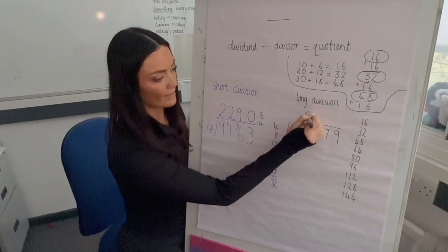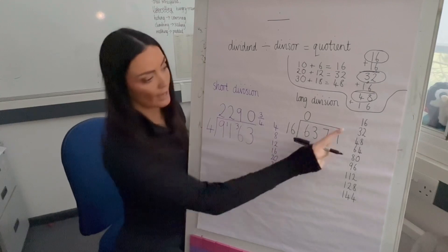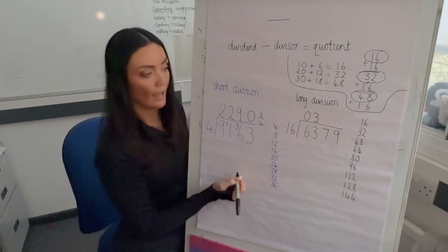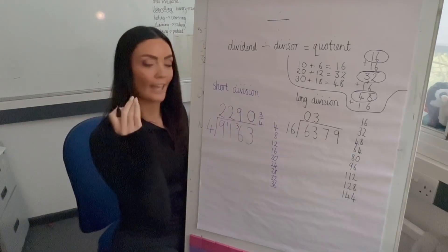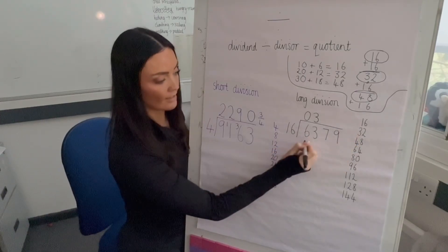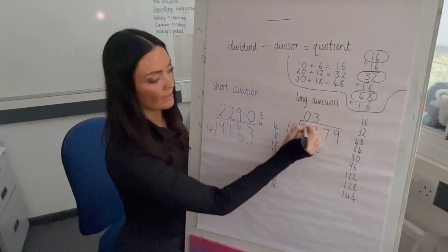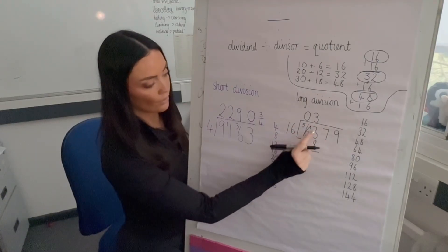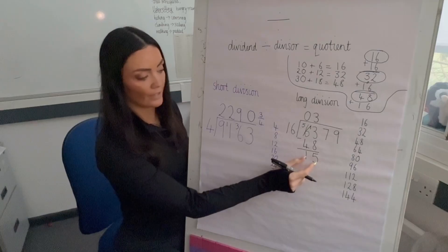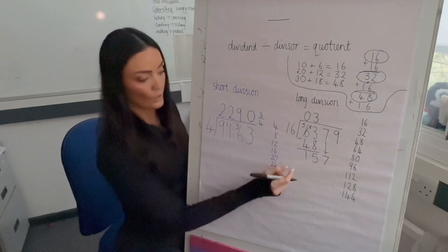How many 16s in 6? Always zero if it's a two-digit divisor. How many 16s in 63? Counting down: three equal groups. Write the 3 on top straight away. In long division, rather than calculating the remainder in our head, we write what we reached underneath and subtract: 63 − 48 → 13 − 8 = 5; 5 − 4 = 1. Remainder is 15.